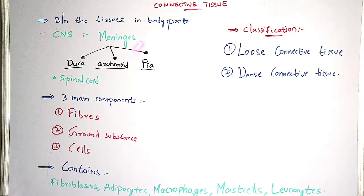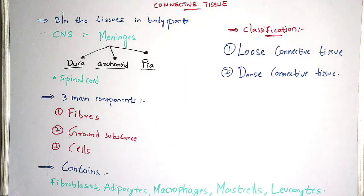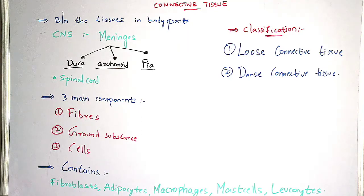Connective tissue also contains fibroblasts, adipocytes, macrophages, mast cells, and leukocytes. Fibroblasts consist of fibers — there are two types: elastic fibers and collagen fibers. Elastic fibers are also known as yellow fibers because they are yellow in color, whereas collagen fibers are white in color.